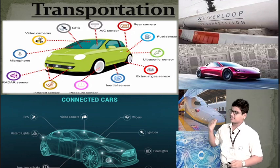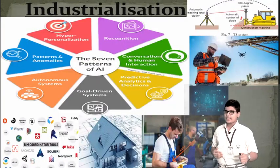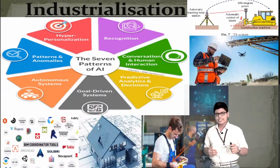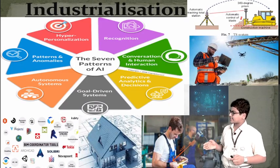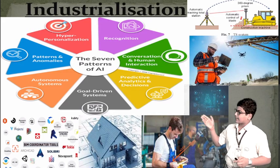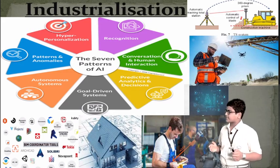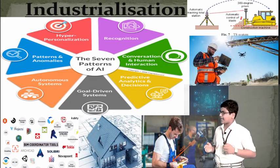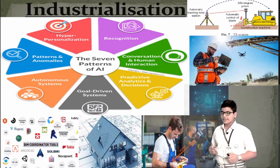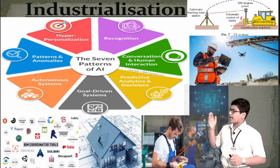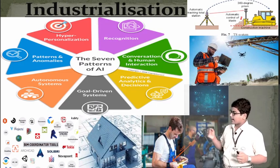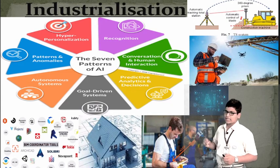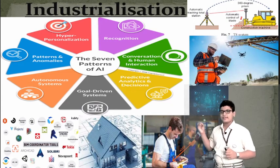Next is our industrialization sector. Modern industrialization is based on the seven patterns of AI: goal-driven systems, predictive analytics and decisions, conversation and human interaction, recognition, hyper-personalization, patterns and anomalies, autonomous systems, and many more. It also includes drone cameras at construction sites and use of BIM software.